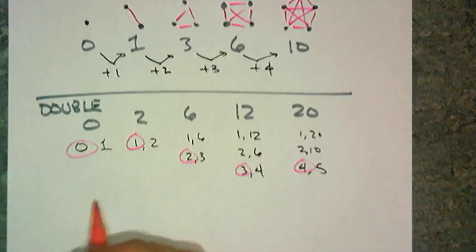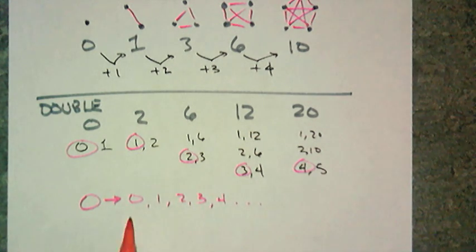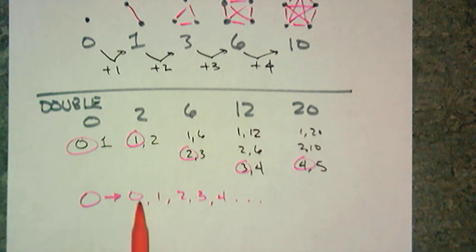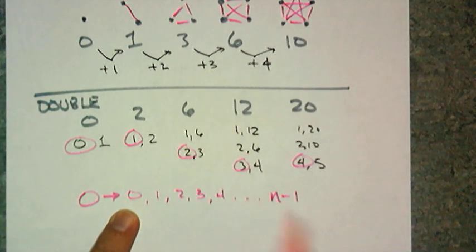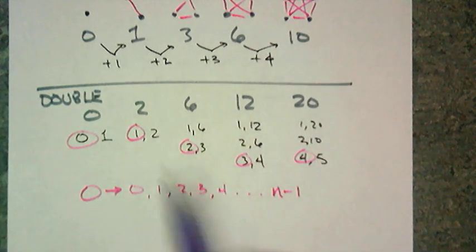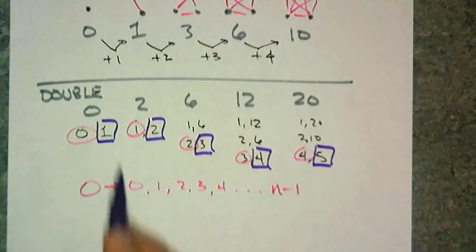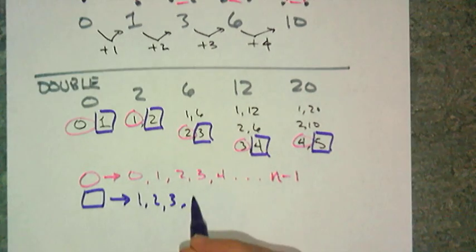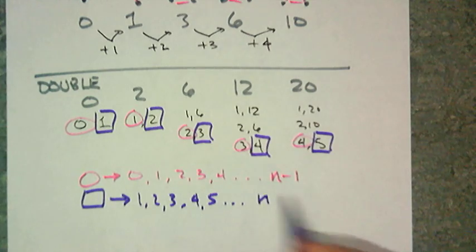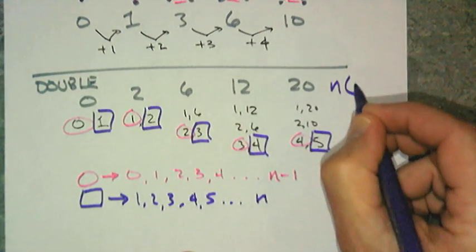So, for the circle pattern, 0, 1, 2, 3, that's a constant difference of 1. So, it's a 1n. But, it starts off at 0. So, it's going to be n minus 1 is the rule for the circles. For its matching rectangle is 1, 2, 3, 4, 5. That one matches 1, 2, 3, 4, 5. That matches n. So, the rule for this 0, 2, 6, 12, 20 is n times n minus 1.